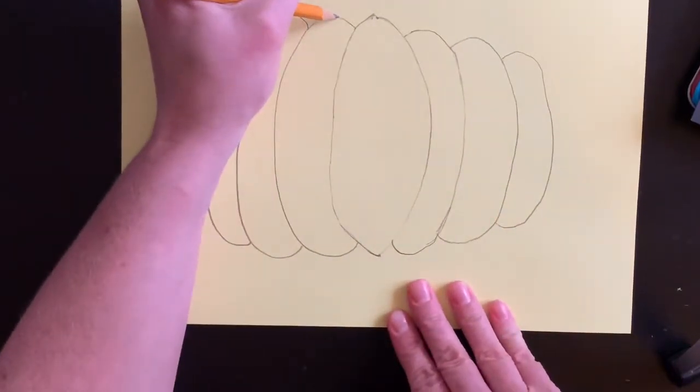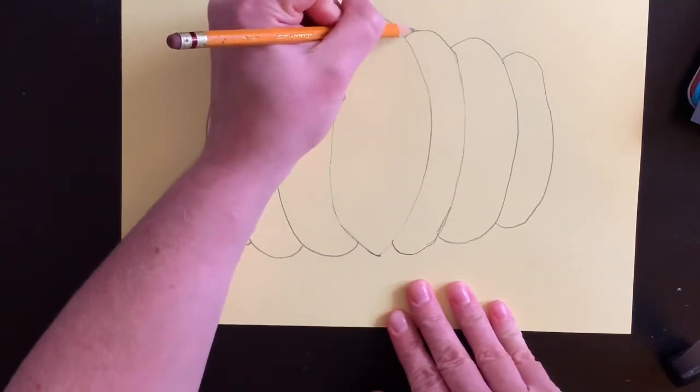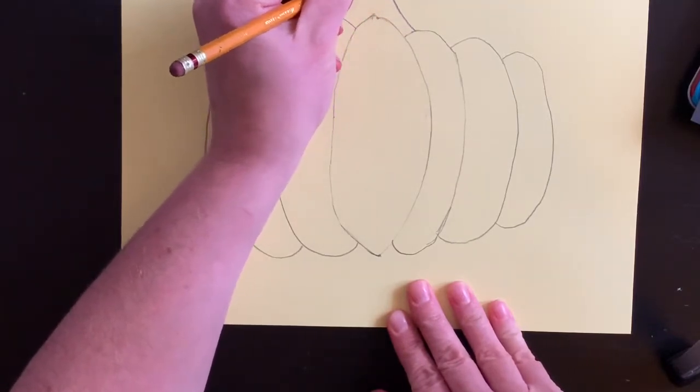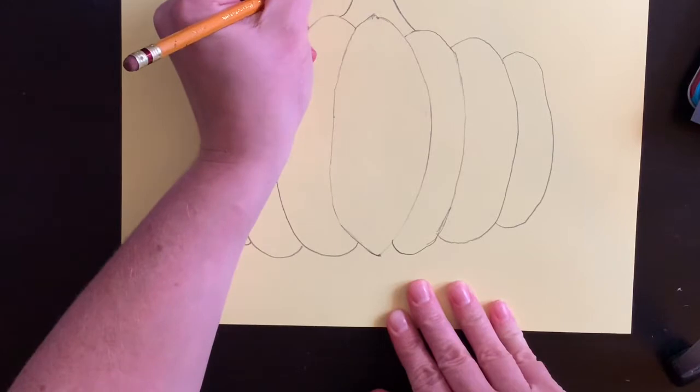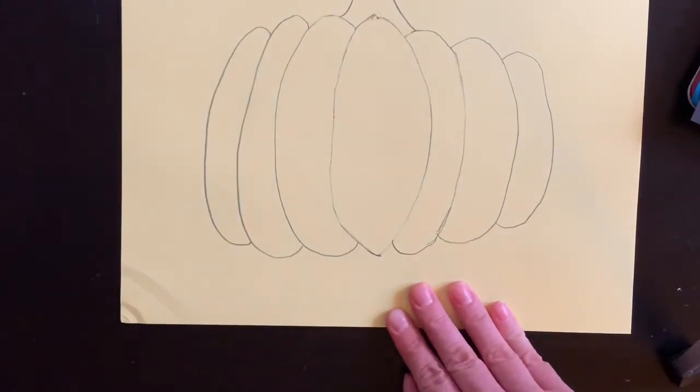Then I'm gonna come in and just draw the little stem. So I do a curved line like that and a curved line up like that, and then disconnect it at the top. So there's my pumpkin in pencil.